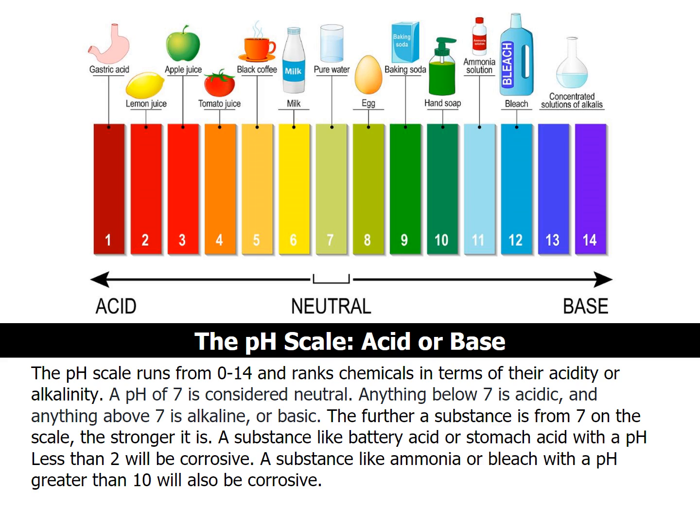The pH scale runs from 0 to 14 and ranks chemicals in terms of their acidity or alkalinity. A pH of 7 is considered neutral. Anything below 7 is acidic, and anything above 7 is alkaline or basic. The further a substance is from 7 on the scale, the stronger it is.